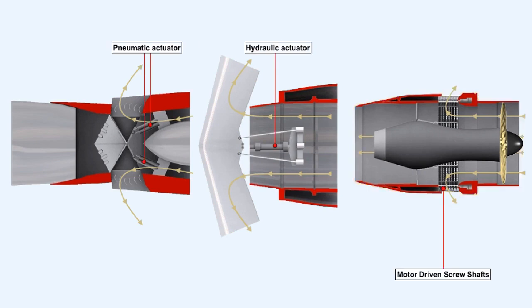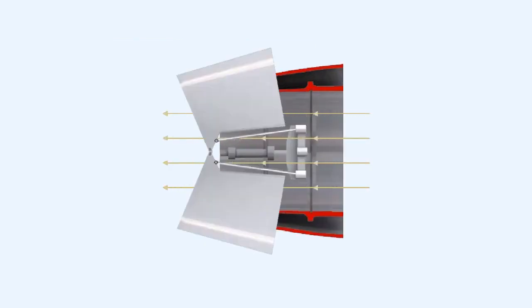All of these types of thrust reversal system are typically operated by hydraulic or pneumatic actuators or motors driving screw shafts. The reversing systems reverse the direction of the gas flow, thereby reversing the thrust.